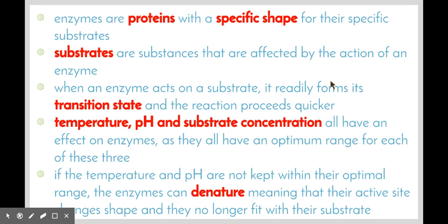Temperature, pH, and substrate concentration all have an effect on enzymes, as they all have an optimum range for each of these three conditions. If the temperature and pH are not kept within their optimal range — which is different for different enzymes — the enzyme can denature. This means that the active site of the enzyme changes its shape, and because of this idea of specificity, the enzyme and substrate can no longer fit together, so the enzyme will no longer function.